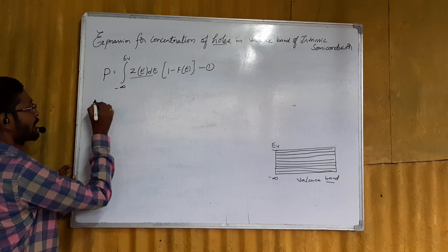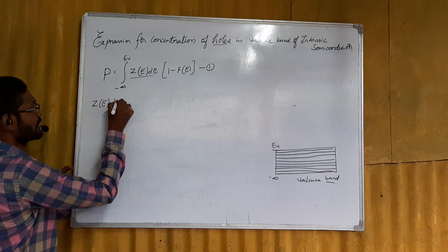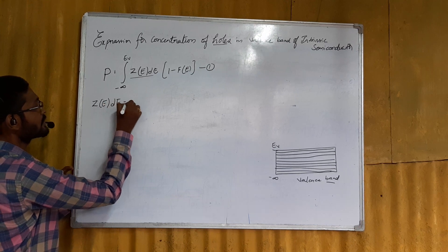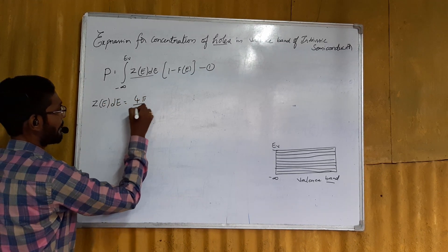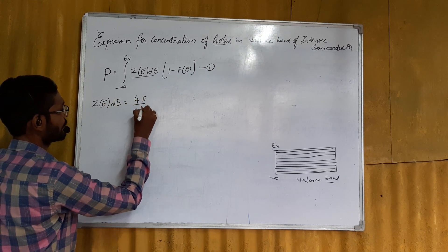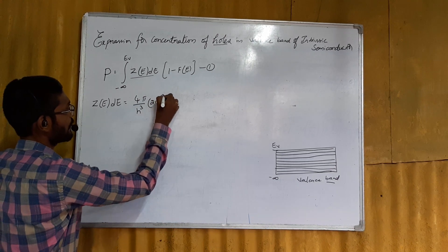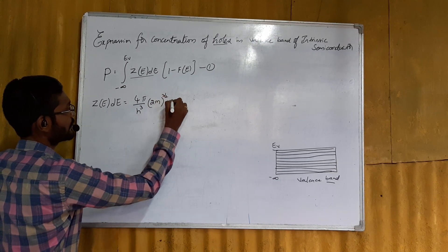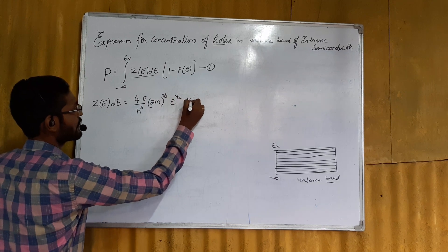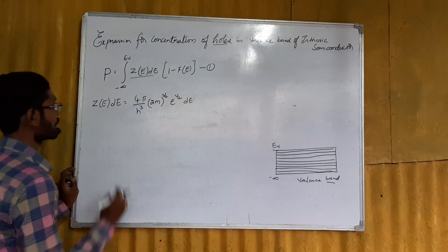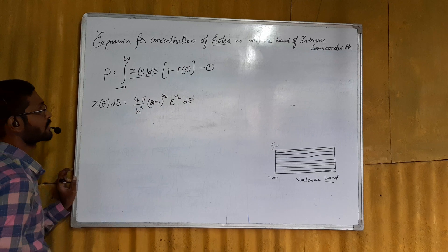We know the density of states Z(e) de is equal to (4π / h³) × (2m)^(3/2) × e^(1/2) de. We will use this equation as equation 1.